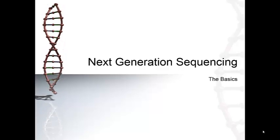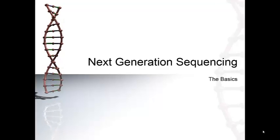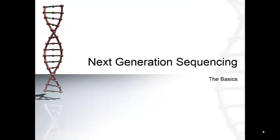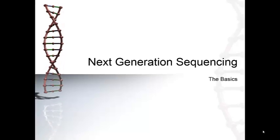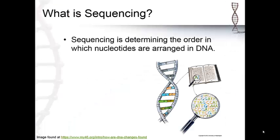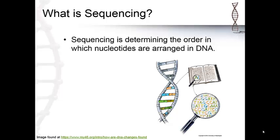This video will be covering the basics on what next-generational sequencing is, and some terminology needed in order to understand the process. Sequencing is determining the order in which nucleotides are arranged in DNA. RNA can also be sequenced by taking RNA and making cDNA with reverse transcriptase. The cDNA is then sequenced the same way as DNA.